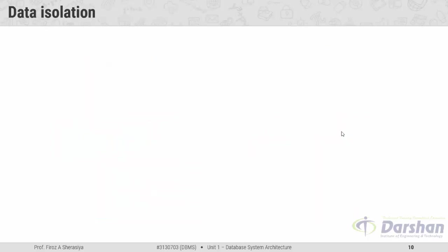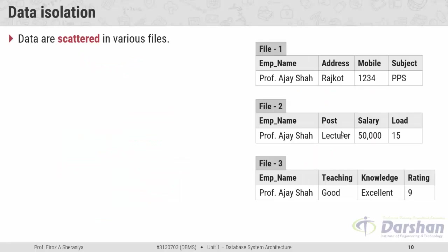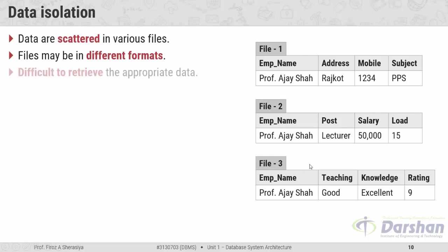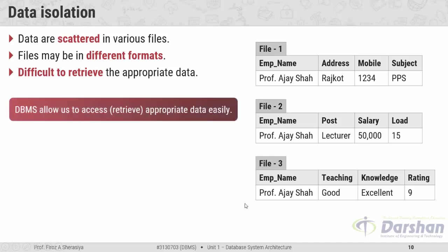Next, the third advantage: data isolation. Data may be scattered in various files. For example, we have three different files: file 1 contains personal information, file 2 contains lecture salary and load related information, and file 3 contains the rating of the faculty. It may also be possible that all files are in different formats — file 1 may be in Excel, file 2 in Word, and file 3 in Notepad. In such cases it is very difficult to retrieve appropriate data by combining data from three files.